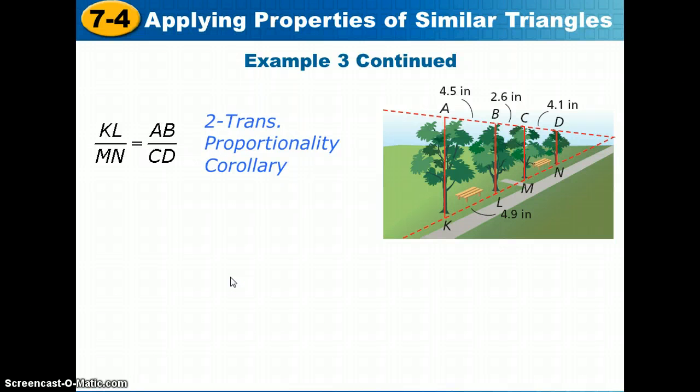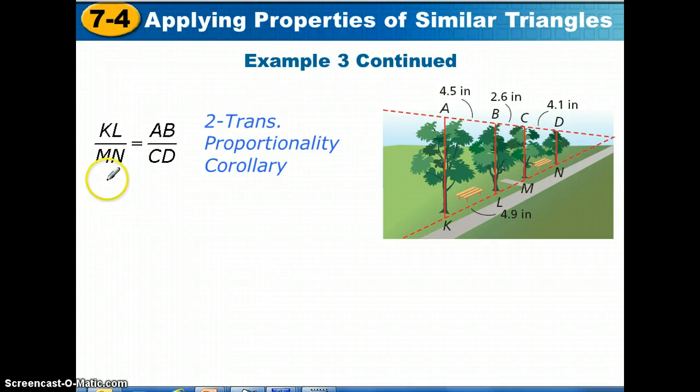So, the first thing we should do is fill in what we know. We can take, instead of KL, we can write 4.9, instead of MN, I'm sorry, we still write MN because we don't know that, instead of AB, we write 4.5, and instead of CD, we write 4.1. Once again, we solve this proportion by taking the cross-products and setting them equal to each other.